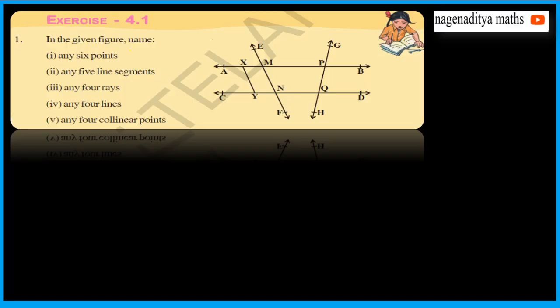In the given figure, name any six points. The answer: six points are A, X, M, P, B, and C. The second question: name any five line segments.